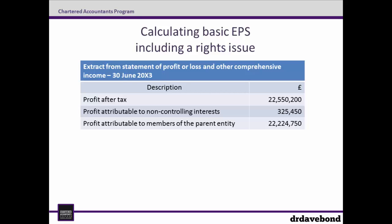In this case we have an after-tax profit for the year ended 30 June 20X3 of £22,550,200, a profit attributable to non-controlling interest of £325,450, and a profit attributable to members of the parent entity of £22,224,750.